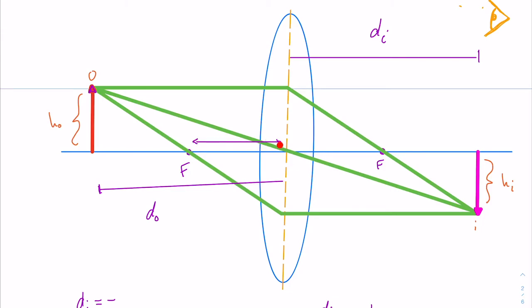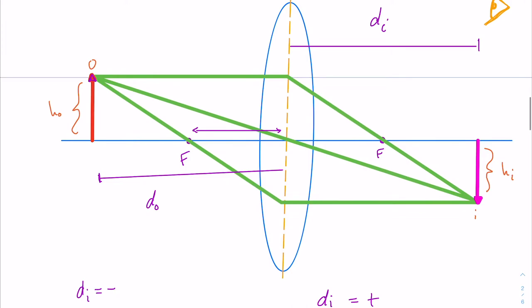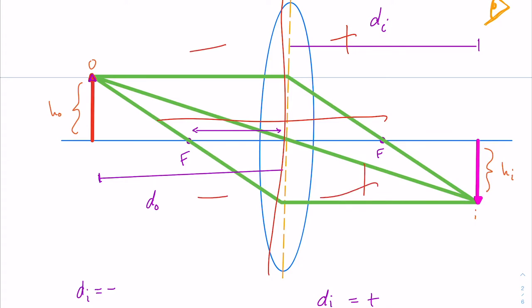These distances here are our focal point distances, same as when we're doing the power. One thing I want to point out is that if DI is positive, it's going to be a real image, and if DI is negative, it's going to be a virtual image — just like a normal graph with positive and negative sides. In this example, we do have a positive DI because DI is on the positive side, so this is a real image. If it were on the left side, it would be a virtual image.